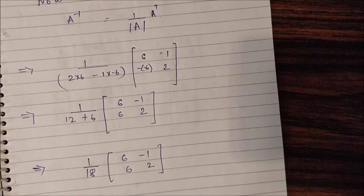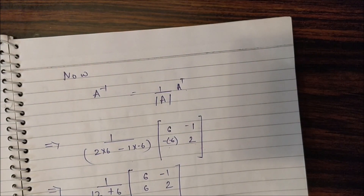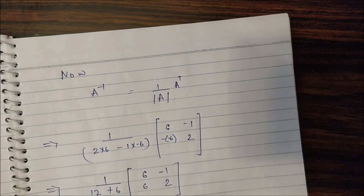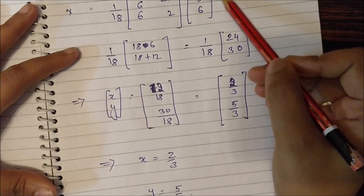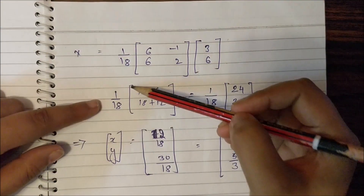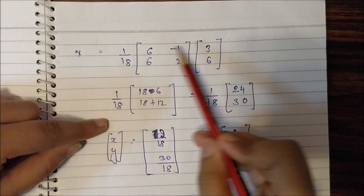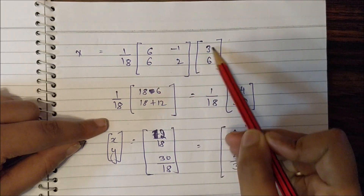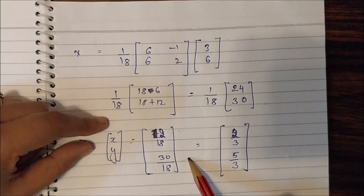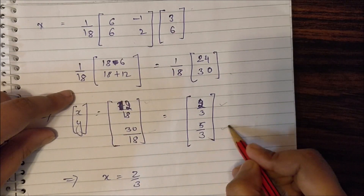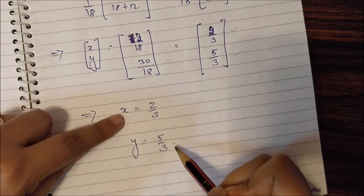Since x equals A inverse times b, and b is the matrix [3, 6], we calculate: 1 over 18 times the matrix multiplication. This gives 12 over 18 and 30 over 18, which simplifies to approximately 2/3 and 5/3. So x equals 2/3 and y equals 5/3.